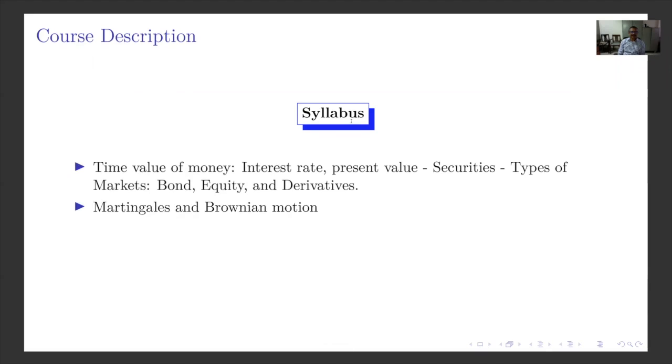And then we will pass on to the pricing models. We also introduce two important notions of probability, namely Martingales and Brownian motions, which are useful in asset pricing models. And then we introduce basically the option pricing models such as binomial models and of course the celebrated Black-Scholes model.